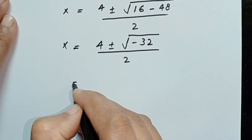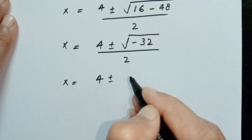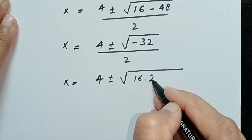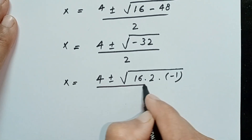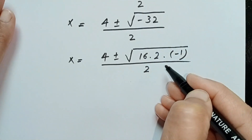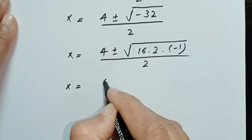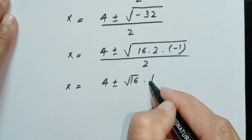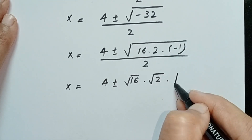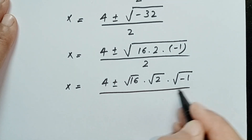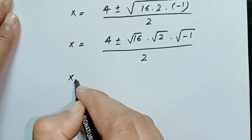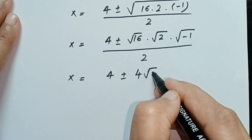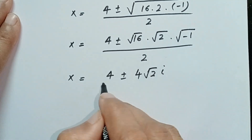We can write −32 as 16 × 2 × (−1), so x = (4 ± √16 · √2 · √(−1)) / 2. Since √16 = 4 and √(−1) = i, this becomes x = (4 ± 4√2 · i) / 2.